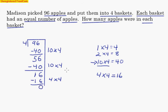Now the reason they call this the partial quotients is because there are partial answers here. First I put 10 apples in each of the four baskets, then I put another 10 apples in each of the four baskets, and then I took the remaining 16, and I put four apples in each of the four baskets.